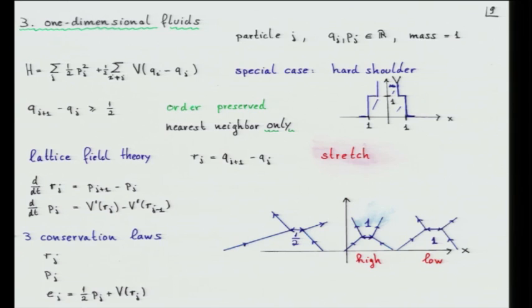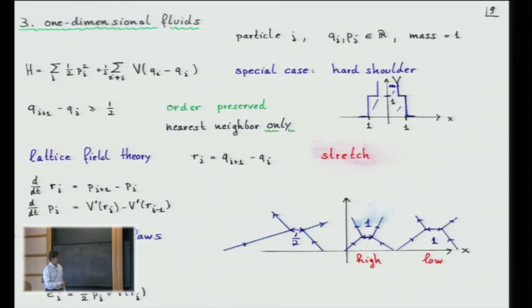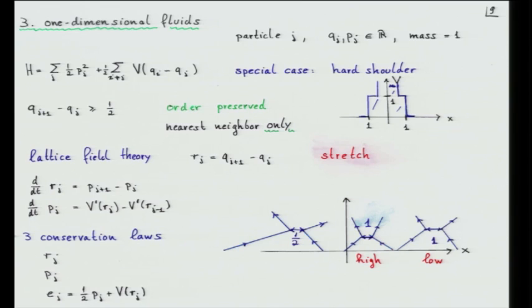The way to handle this is to think of it as a lattice field theory and introduce the stretch variable — just the difference between neighboring particles. You write down the evolution equation, which is already of conservation form. Then there's another conserved quantity: the energy, given in terms of these variables as the kinetic energy plus the potential energy of a neighboring pair. It's a very simple system.